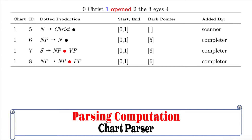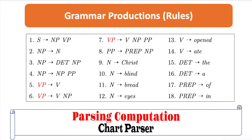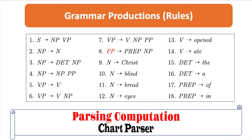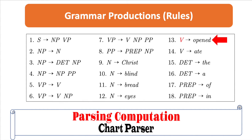Since ID number 7 has a dot before VP, we have to add all the VP productions in chart 1. Then we have to process ID number 8. Since ID number 8 has a dot before PP, we have to add all the PP productions in chart 1 — fortunately we only have one. Then we have to process ID number 9. Since ID number 9 has a dot before V, and V is a part-of-speech category, instead of predicting it should scan the grammar to check whether or not the input word OPENED is present.